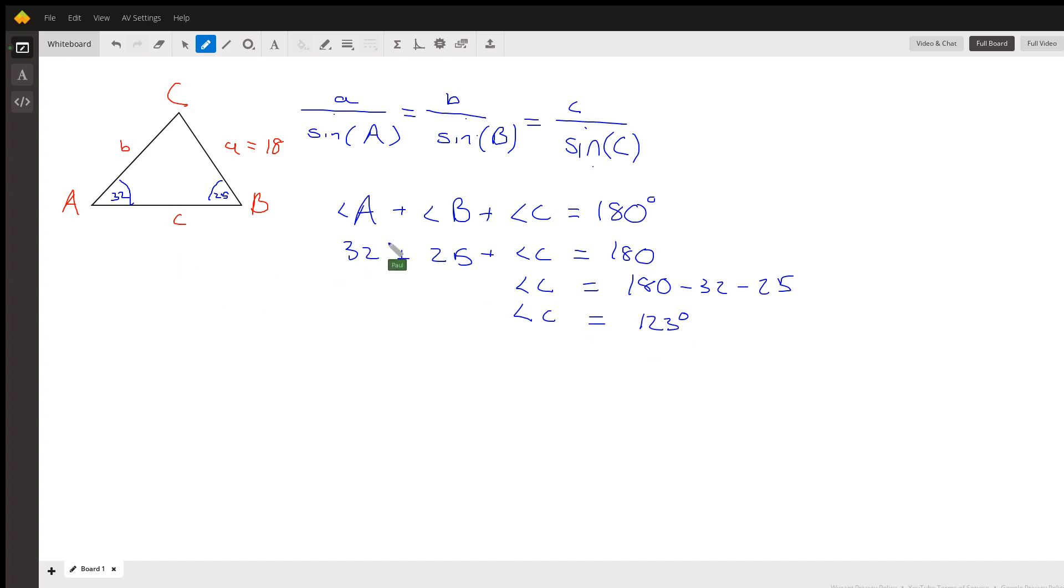So now we can use the law of sines. So we're going to put A, which is 18. We can put this in our graph here, 123. And so we know A is 18, and then we're going to take the sine of A, which is 32.